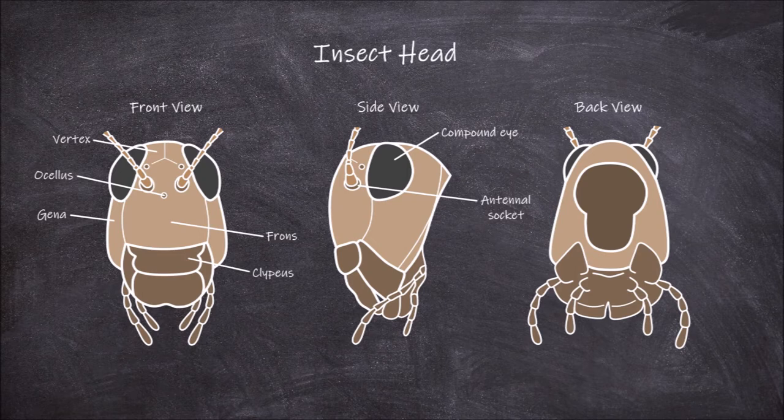As we move to the back of the head, we find superiorly an area called the occiput, and inferiorly an area known as the postgena. Between the anterior vertex and gena and the posterior occiput and postgena is the occipital suture.